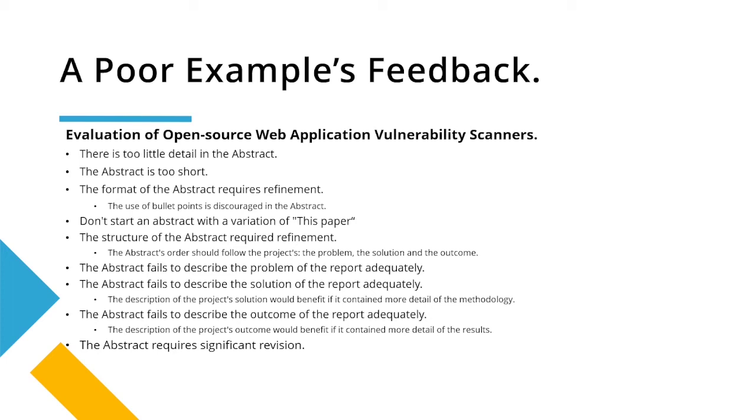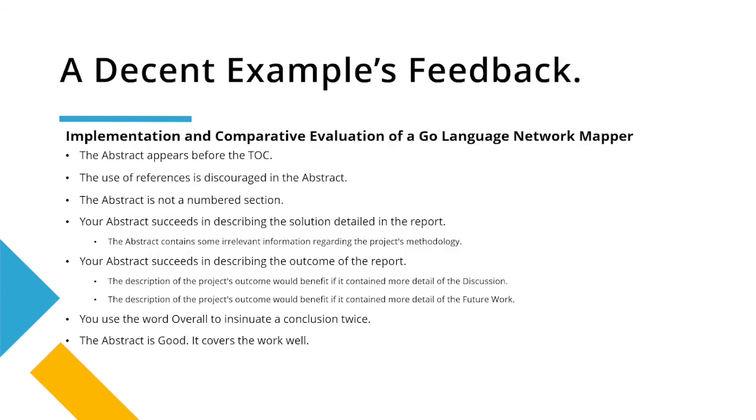This would not receive a good mark. Here's our decent examples feedback. This feedback starts with three simple errors which you can get wrong once but never again. The abstract appears before the table of contents. It shouldn't be numbered. And as I've said before, it should be plain Jane. Doesn't include any references in your abstract.